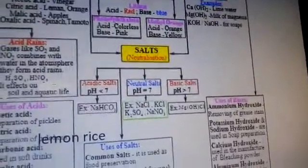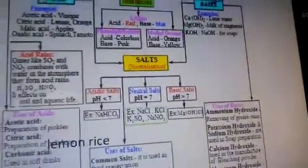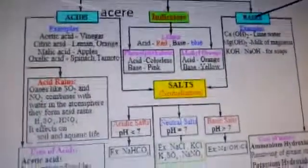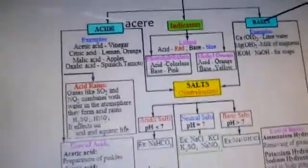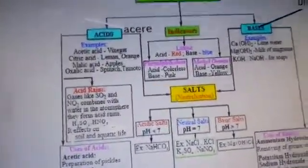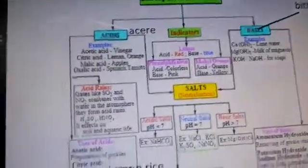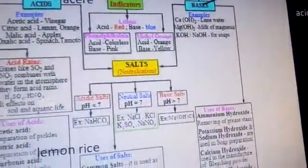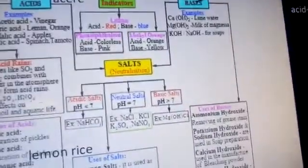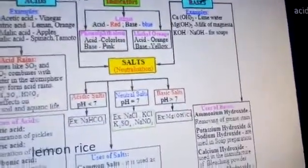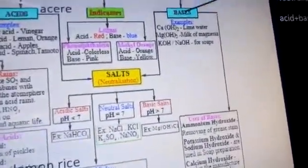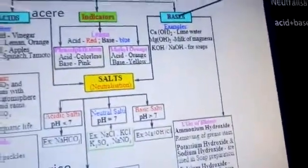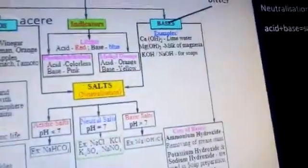There are three types of salts. Acid salts are defined as having a pH value more than 7. Neutral salts have a pH value equal to 7. Basic salts have a pH value lesser than 7.